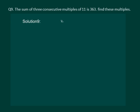Let us understand what 3 consecutive multiples of 11 mean. If 22 is one multiple of 11, then the next multiple is 33 and the next one would be 44. That means if x is one multiple of 11, the next will be x plus 11 and the one after would be x plus 22.